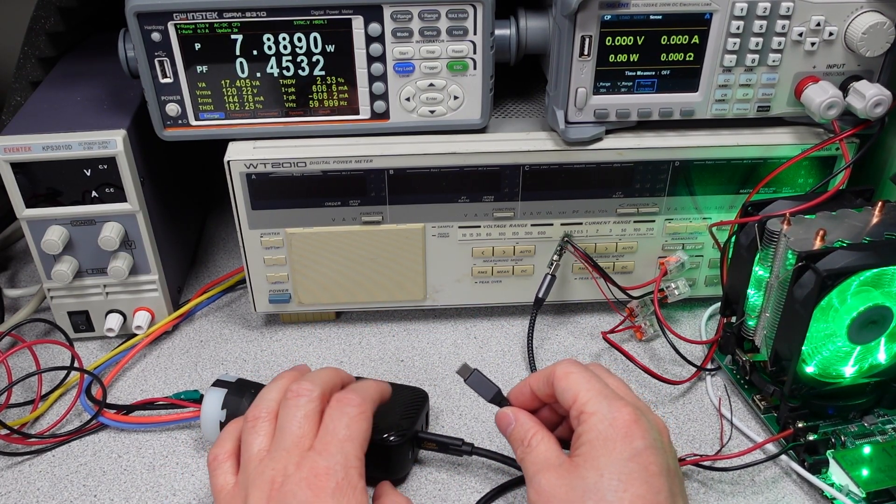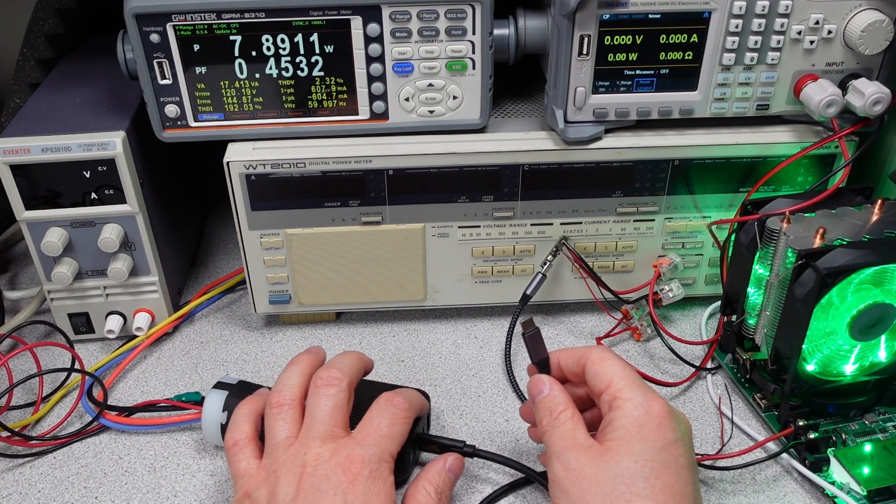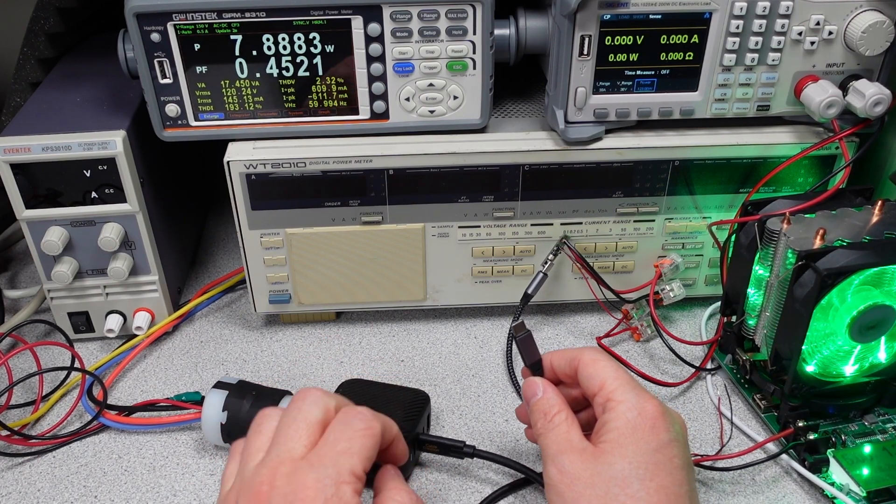So like, these are 200 watt ports. My suspicion is that these are controlled by one controller, and these two lower ports, the lower watt ports, are controlled by another controller. There's probably two USB controllers in here.